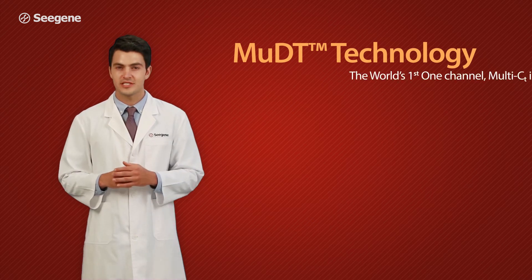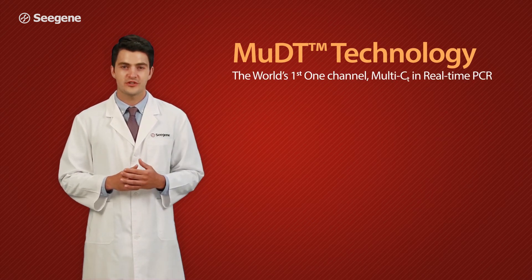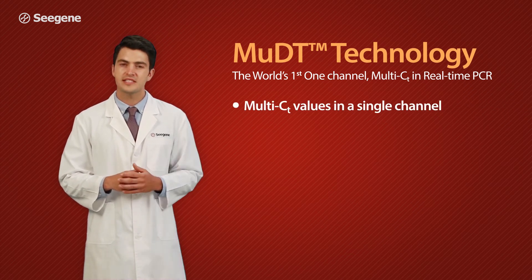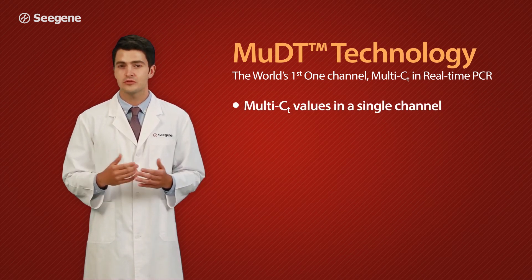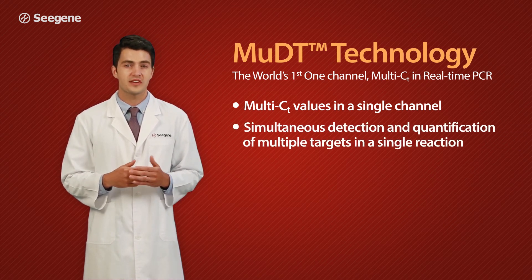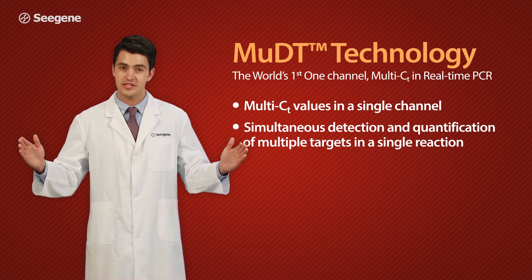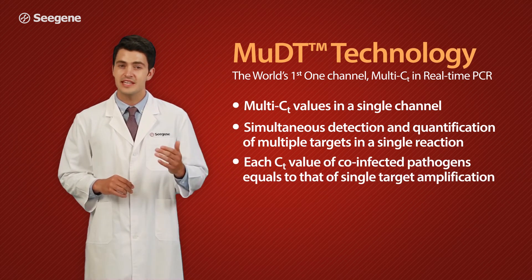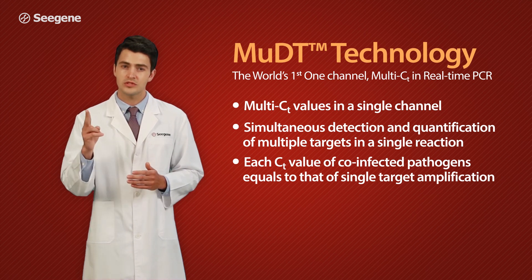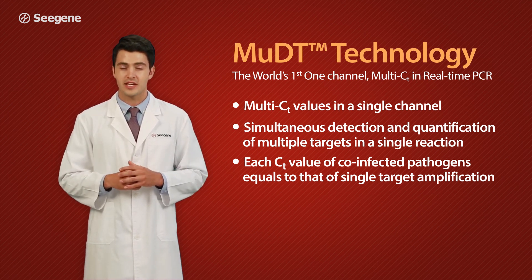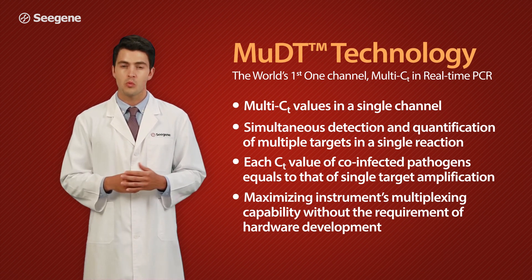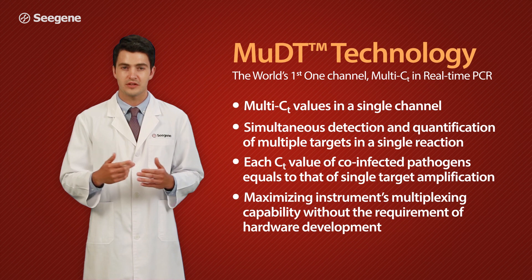MUDT technology — the world's first one-channel multi-CT in real-time PCR. Multi-CT values in a single channel. Simultaneous detection and quantification of multiple targets in a single reaction, where each CT value of co-infected pathogens equals that of single target amplification. Maximizing the instrument's multiplexing capability without the requirement for hardware development.